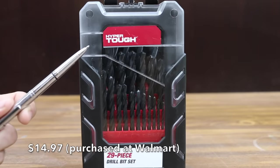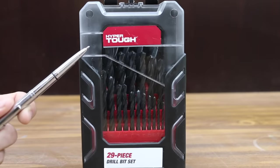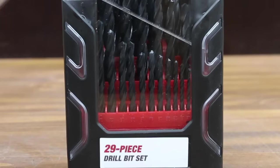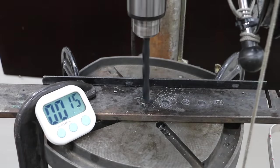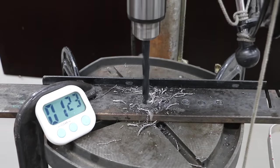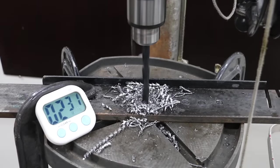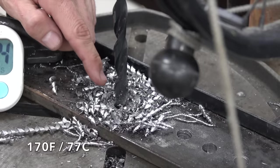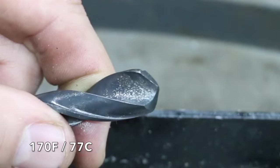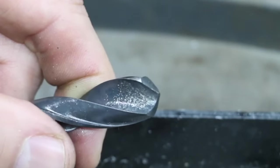Just like the DeWalt bits, the HyperTuff also cost $14.97 for their Black Oxide drill bits. The difference though is you get 29 drill bits with HyperTuff instead of just 14 with DeWalt. Two minutes and 32 seconds for the HyperTuff. 170 degrees Fahrenheit on the tip of the drill. The HyperTuff does have a little bit more wear than the other brands.